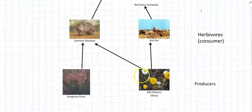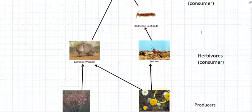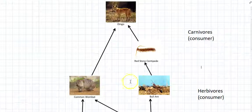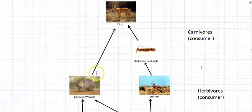So that's the method for drawing a food web. We can see that you can have multiple arrows going in different directions to show what eats different species.